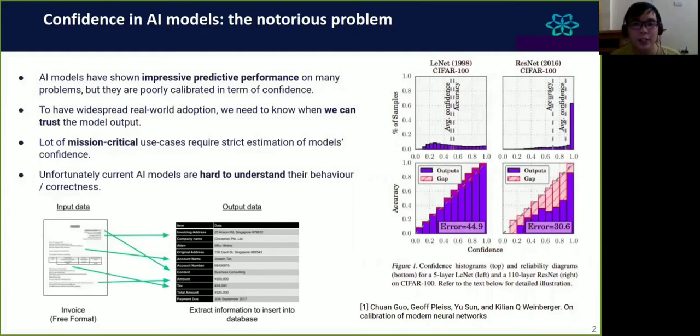To have right adoption, we need to know when we can trust the model output. There are a lot of mission-critical use cases that require strict estimation of the model's confidence. For example, for a document intelligence system, where the system has to read the input image and extract relevant information from the raw image into key-value output format. If the extracted value is wrong, the consequence is extremely terrible and it can affect the business. It is important to understand the behavior and capture the correctness of current AI models.